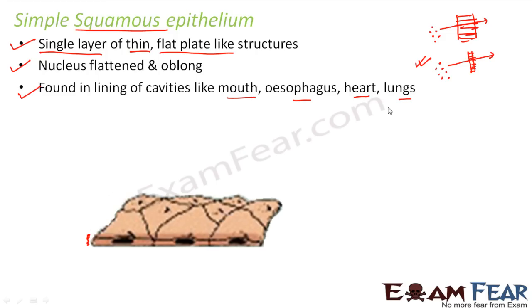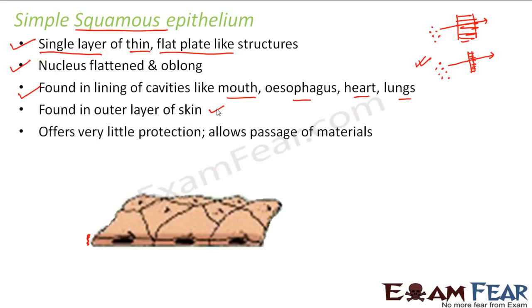Selectively permeable means it allows certain substances through and blocks others — we have spoken about this in detail in the lesson on cell. Simple squamous epithelium is also found in the outer layer of skin, because there too, transfer of material has to take place — when we apply medicine, for example, it has to be transported inside. It offers very little protection but allows passage of materials. Since it is very thin and flat, it is itself very delicate and cannot provide much protection. The passage of materials is the major function this kind of epithelium performs.